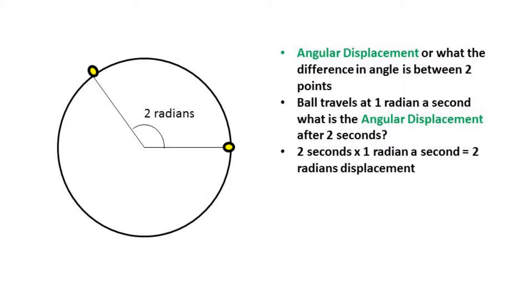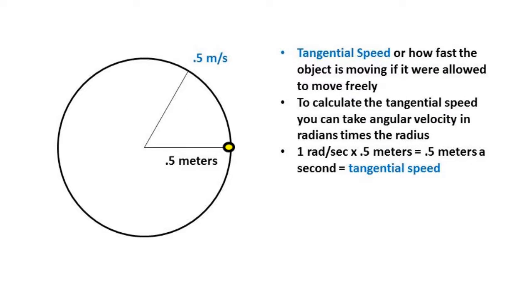The ball has moved two radians from initial position. On to our third topic, tangential speed. Tangential speed is the speed of the ball if it were allowed to move freely. Tangential speed can be calculated by taking the angular velocity in radians a second and multiplying by the radius of the circular path.